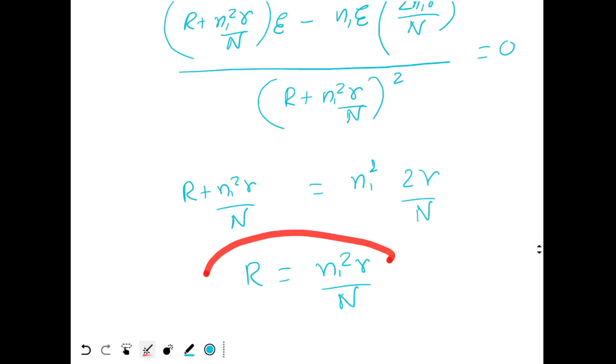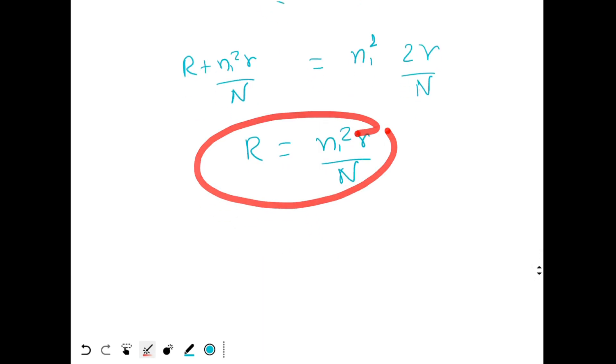You could have obtained this condition directly using the maximum power transfer theorem where the current through the external resistor is maximum when it is equal to internal resistor. So this is the condition for the current to be maximum. I could rewrite this as R equal to N1 square r by N2. So this is the relation that we are looking for. This is the answer.